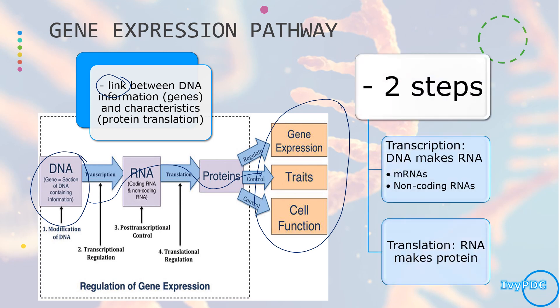In its simplest form, the gene expression pathway has two steps. First is transcription, where DNA will make an RNA. The transcription process has two products: the mRNA and non-coding RNAs. The second step is translation, where the RNA — specifically the mRNA produced during transcription — is used to make protein.